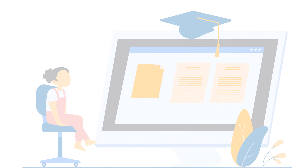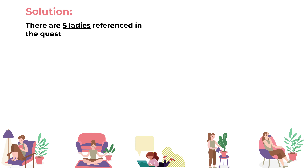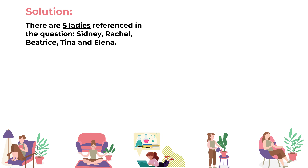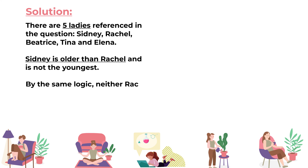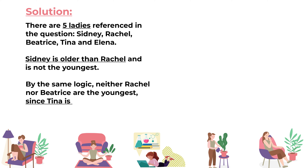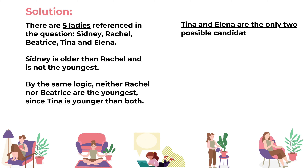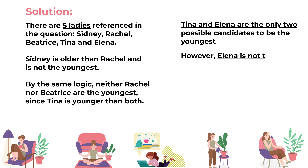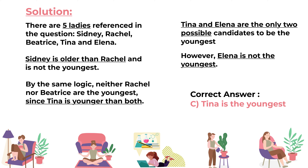To solve these types of challenges you need to look at the facts as well as common sense. There are five ladies: Sydney, Rachel, Beatrice, Tina, and Yelena. Sydney is older than Rachel, so Sydney is not the youngest. By the same logic, neither Rachel nor Beatrice are the youngest because Tina is younger than both of them. That leaves Tina and Yelena as the only two possible candidates, but the last sentence mentions that Yelena is not the youngest.